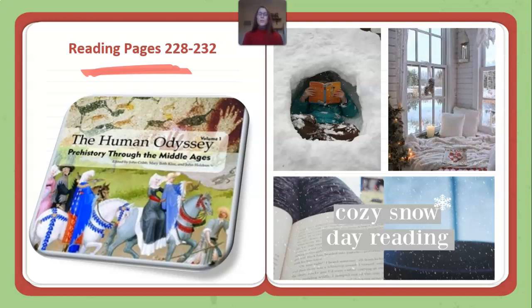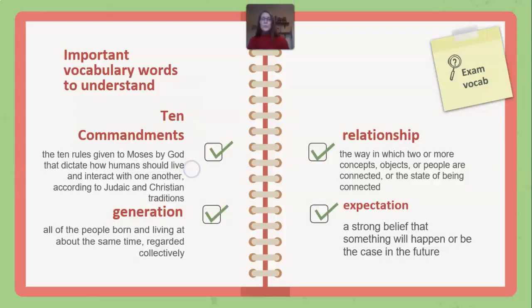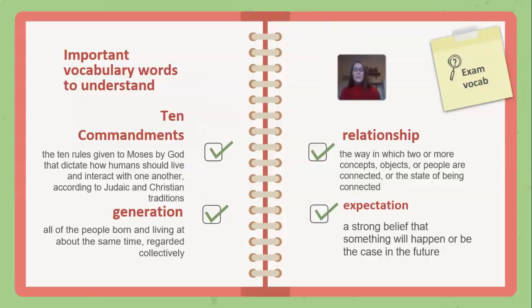Please make sure you have your reading complete to tie all of the information together — read pages 228 to 232. Important vocabulary words: The Ten Commandments are the ten rules given to Moses by God that dictate how humans should live and interact with one another, according to Judaic and Christian traditions. Generation refers to all of the people born and living at about the same time regarded collectively — typically your age group, my age group, your grandparents' age group. Relationship is the way in which two or more concepts, objects, or people are connected. Expectation is a strong belief that something will happen or be the case in the future.